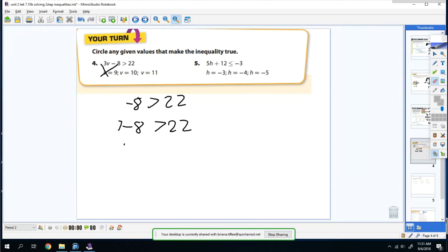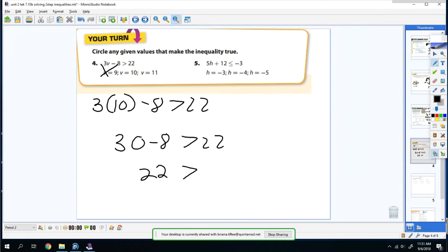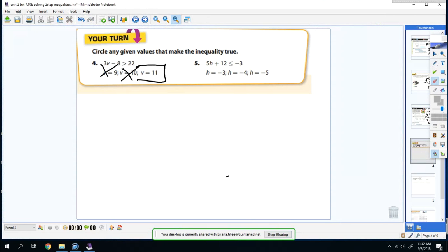So try it again. So now you're going to do 3 times 10 minus 8 is greater than 22. So you have 30 minus 8 is greater than 22. So this one's going to be 22 is greater than 22, which again is false. So most likely 11 will be true. But let's just check it in case. So now you're going to do 3 times 11 minus 8 is greater than 22. So 33 minus 8 is greater than 22. So that's going to be 25 is greater than 22, which is true.